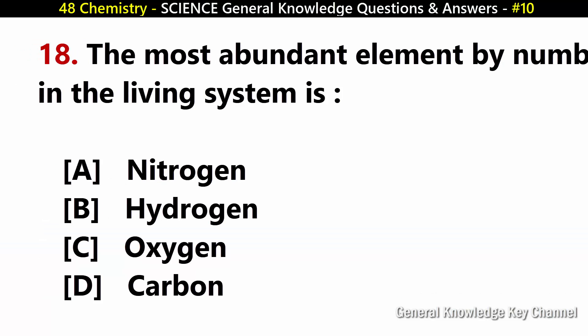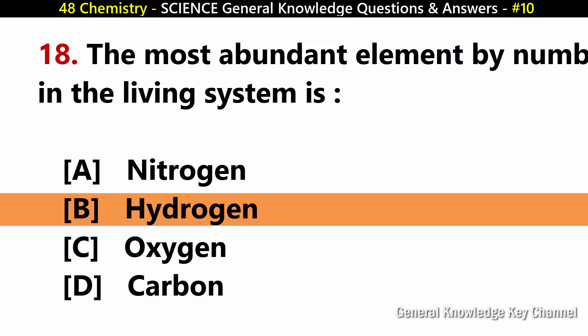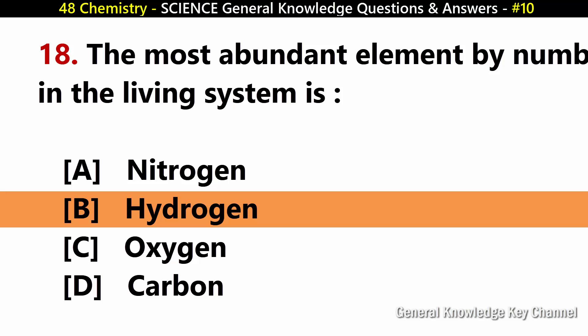The most abundant element by number in the living system is? Answer B: Hydrogen.